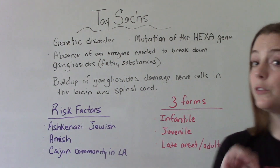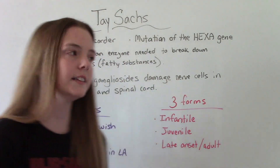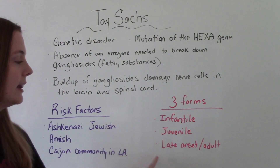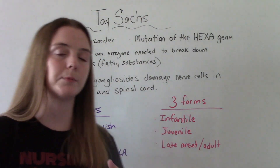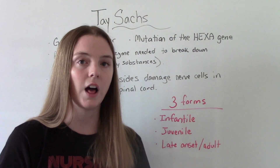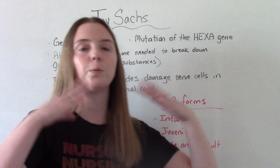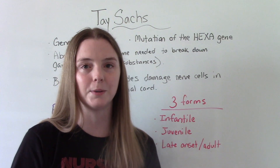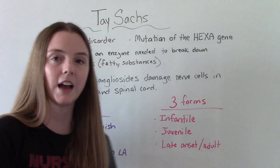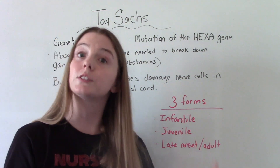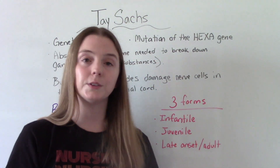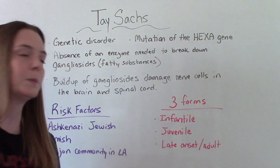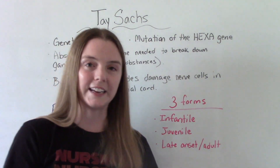There are three forms of Tay-Sachs disease: infantile, juvenile, and then late onset, sometimes also referred to as adult. The one you're probably learning the most about in your pediatrics course will of course be the infantile one — that's the most common one. But I'm going to break down all three forms so you can learn a little bit more about each.